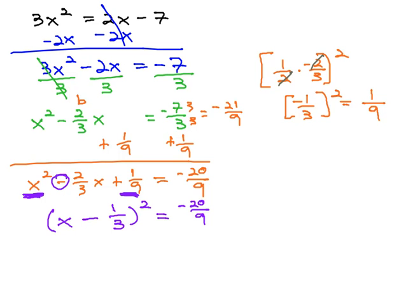And when we do that, we now have an equation we can quickly solve. We can get rid of the squared by taking the square root of both sides. Square and square root are gone. We get x minus 1 third on the left equals.